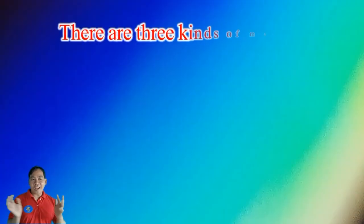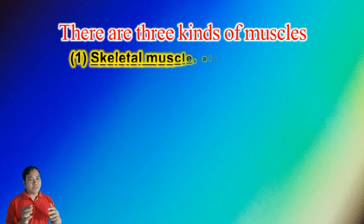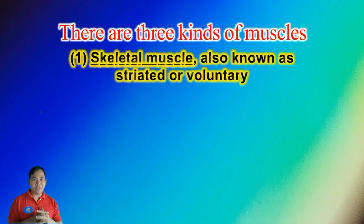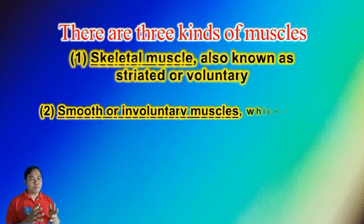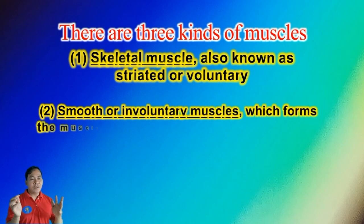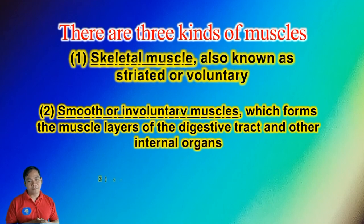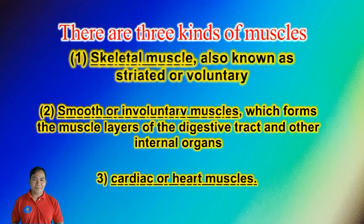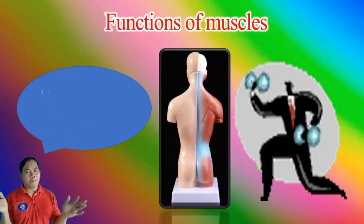There are three kinds of muscles: skeletal muscles, also known as striated or voluntary muscles; smooth or involuntary muscles, which form the muscle layers of the digestive tract and other internal organs; and three, cardiac or heart muscles.